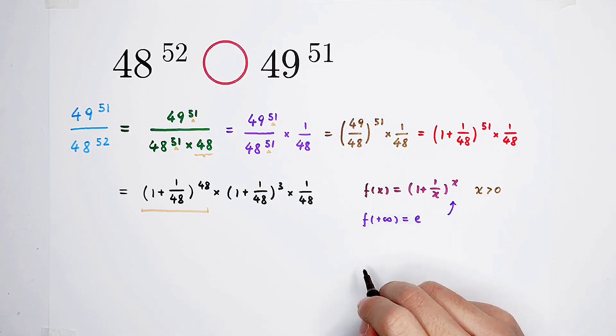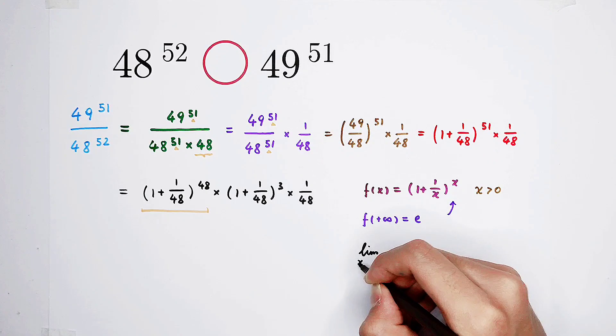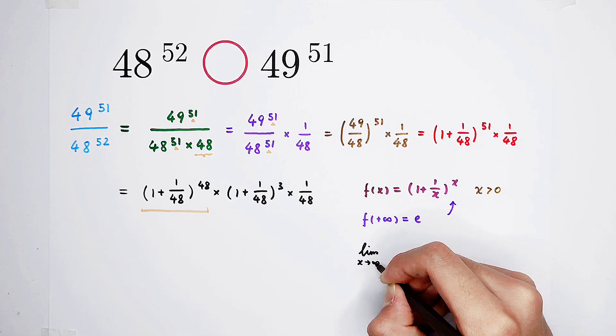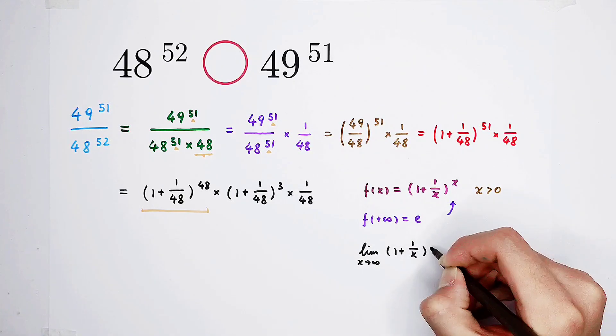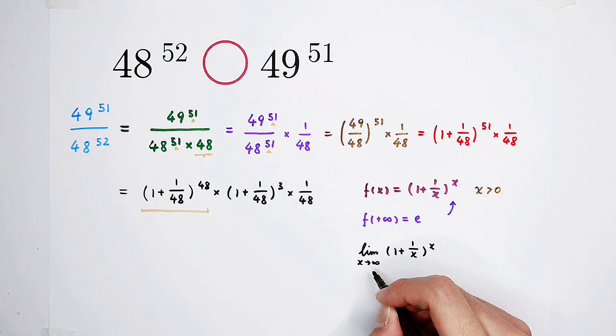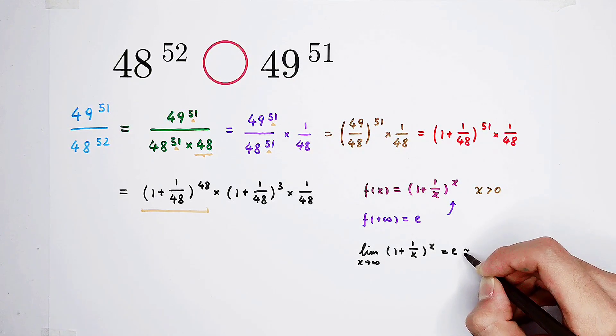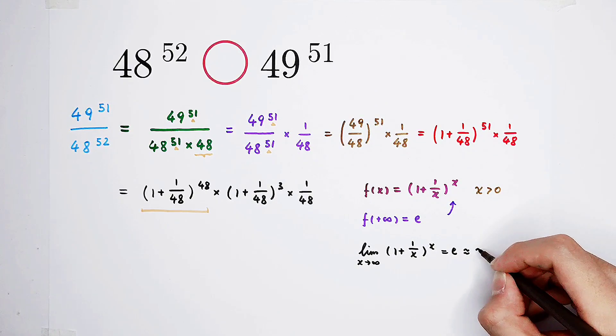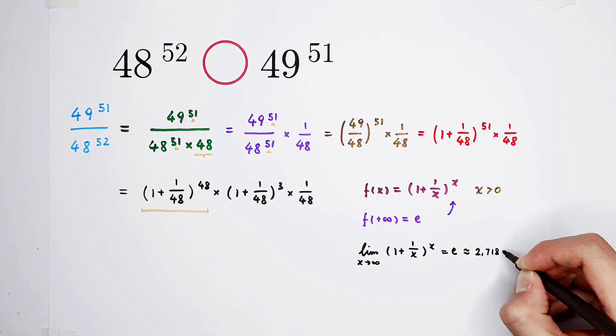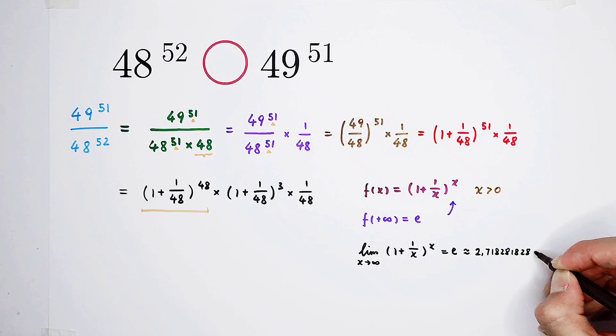That means, I can write it this way. The limit of 1 plus 1 over x, all to the power of x, when x tends to infinity, is equal to e. And it is approximately equal to 2.718281828459045 and so on.